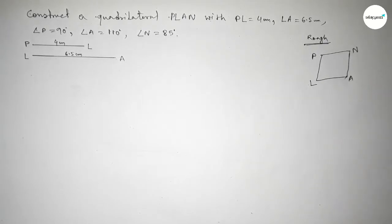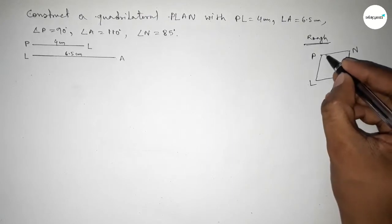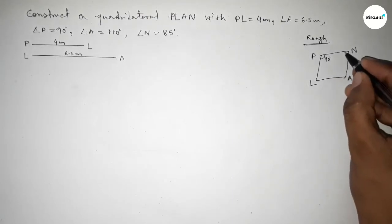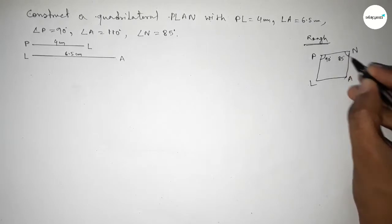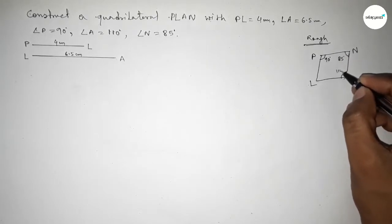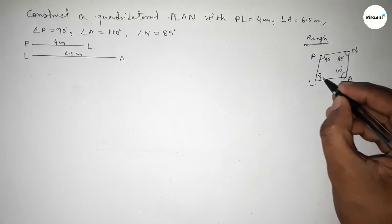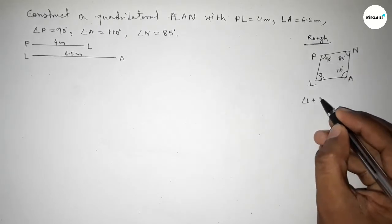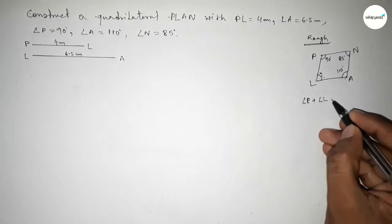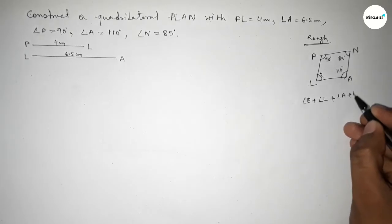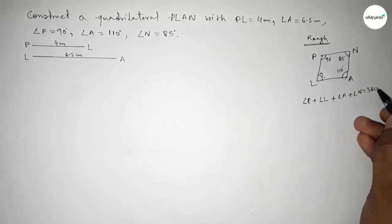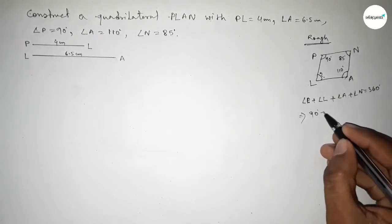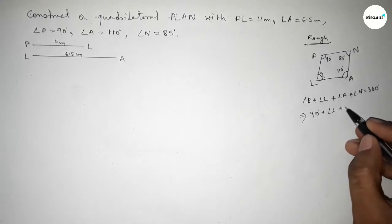Now, roughly discussing some properties of a quadrilateral, and roughly drawing a quadrilateral — this is PLAN. The given angles are: this angle is 90 degrees, this angle is 85 degrees, and this angle is 110 degrees. So what is the remaining angle? We know that the sum of all four angles of a quadrilateral is 360 degrees.